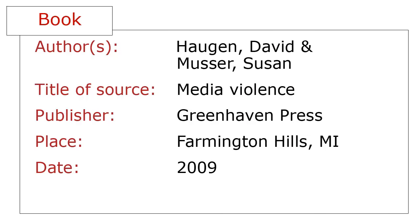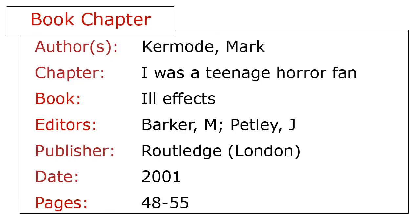For a book, you'll need the author, the book title, the publisher, the place of publication, and the publication year. Some books have chapters written by different people. If that's the case, you'll need to cite the individual chapter rather than the book. You'll need all the information about the book the chapter is in, along with the chapter's author, title, and pages. For other types of sources, you'll need other information, so make sure you know what type of source you have so you can check to see what information you need.